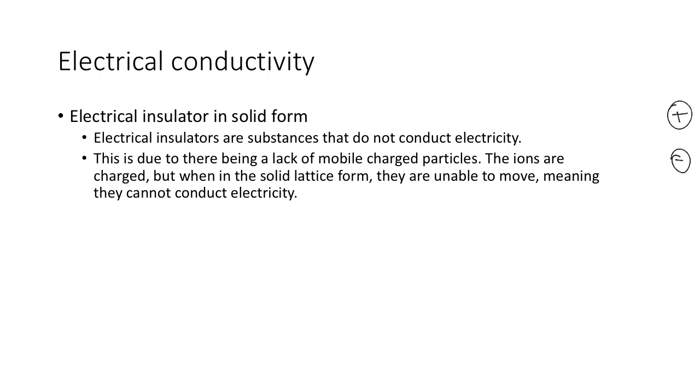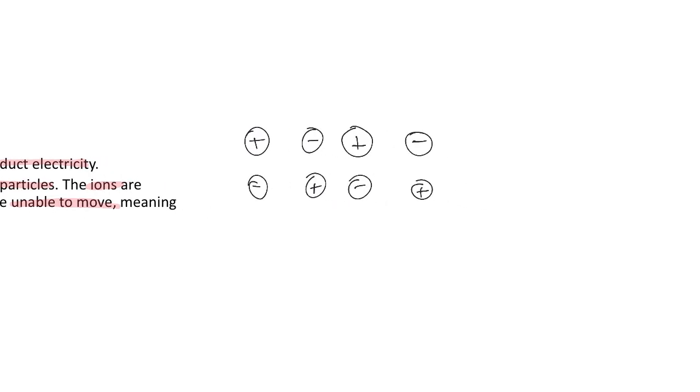So electrical conductivity. They are insulators in solid form, which means they don't conduct electricity. This is due to the lack of mobile charged particles. The ions are charged, but when they're in the solid lattice form, they are unable to move, which means they can't conduct electricity. It's in that lattice form. Those ions don't move. So therefore, there are charged particles, they're simply not mobile.